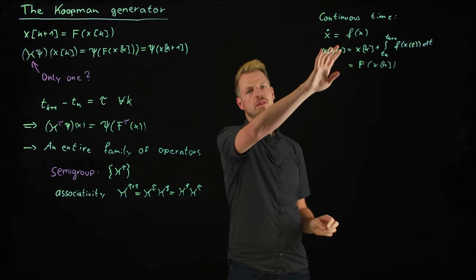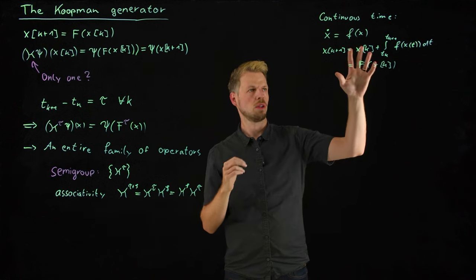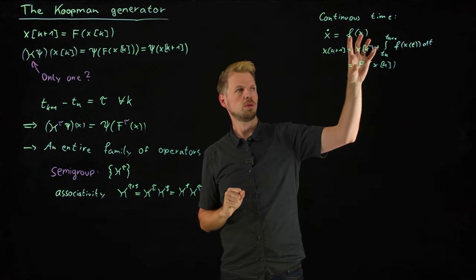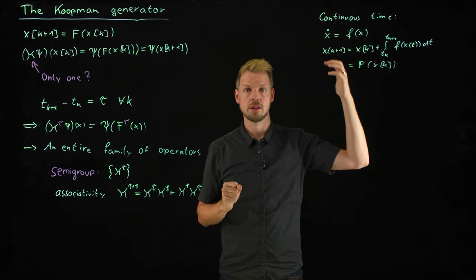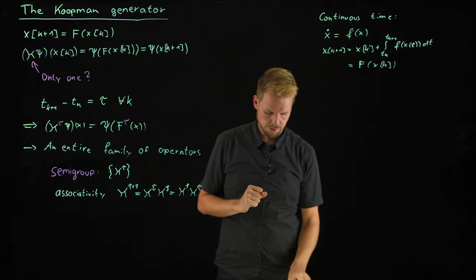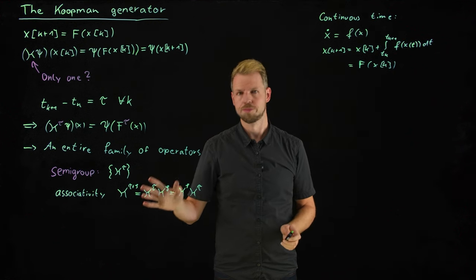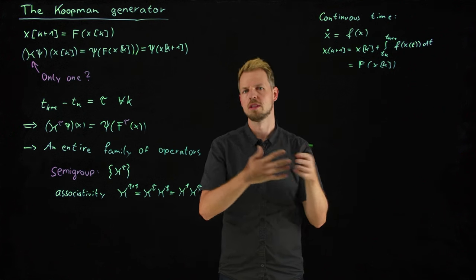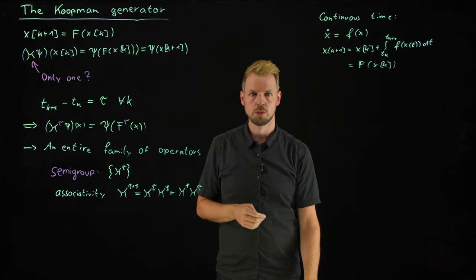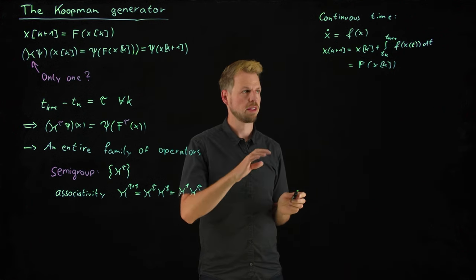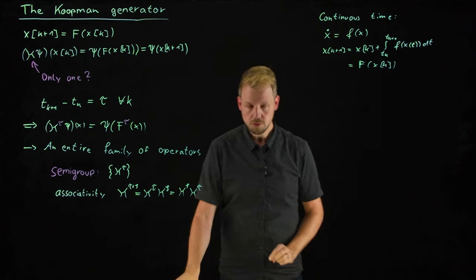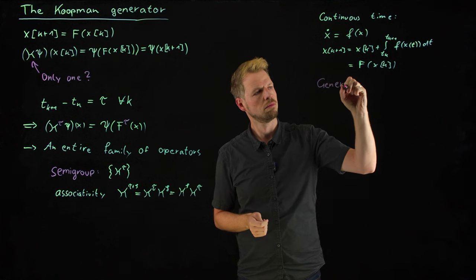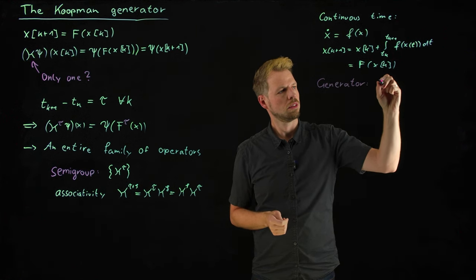Now one can ask oneself, can we not find a continuous time analog to this Koopman operator that really allows us to become independent of the time step? And what we know about semigroups, this is not a concept that is related to the Koopman operator per se, but the semigroup concept is that there exists a generator of this semigroup.